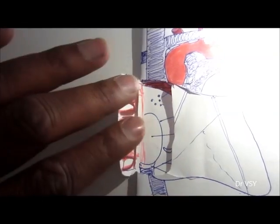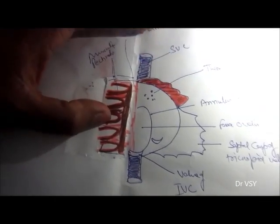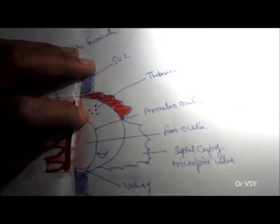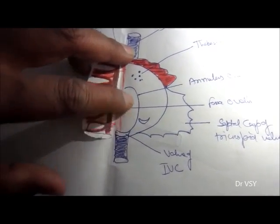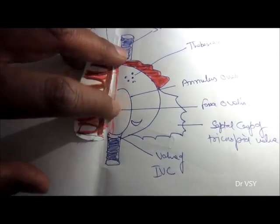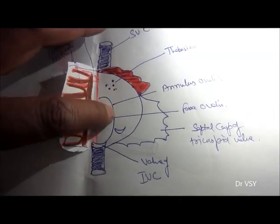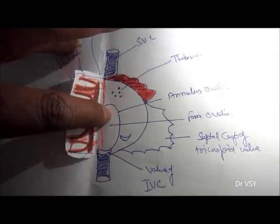Now looking at the interatrial septum — opening the heart, you can see the superior vena cava and the thebesian vein opening. There is a depression present in this region known as the fossa ovalis.